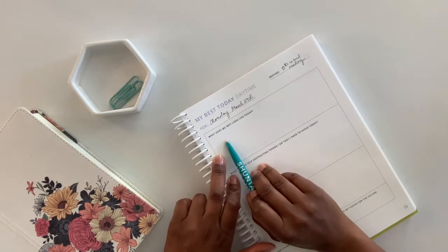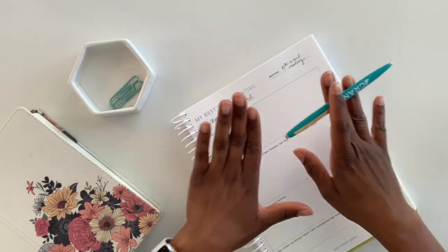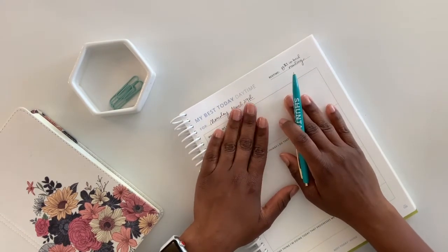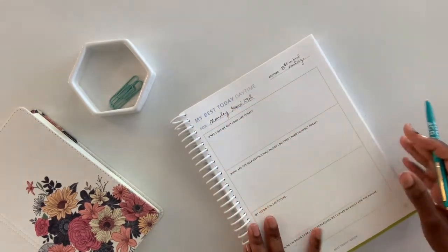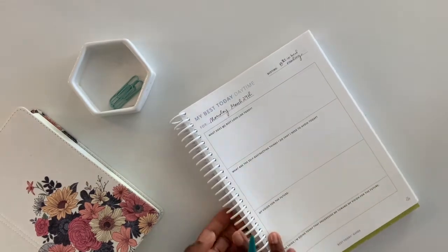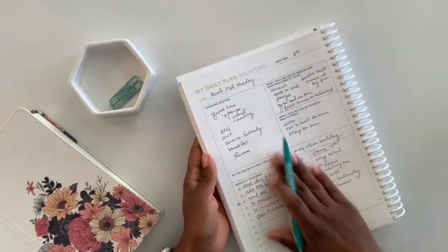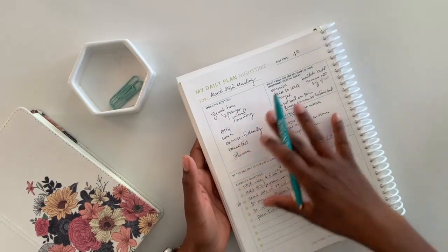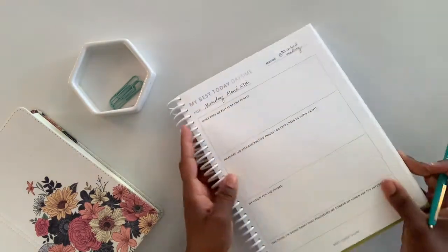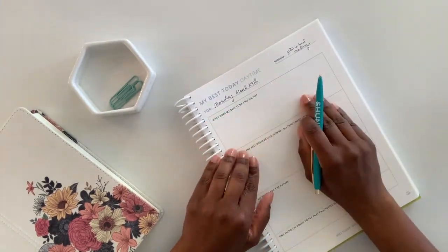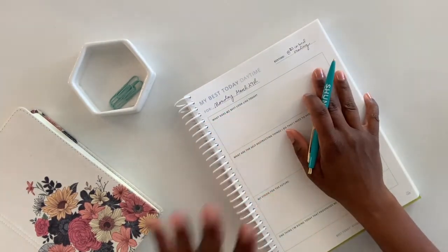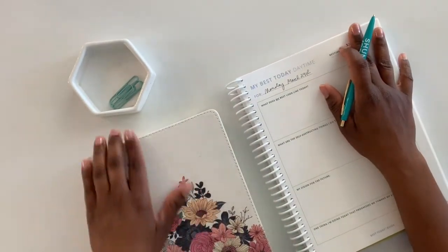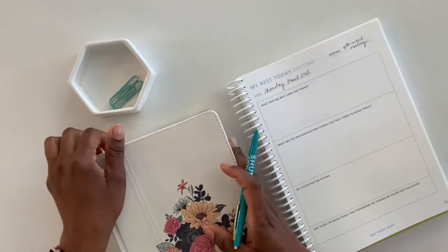And then what does my best today look like? Every day this changes or most days this changes a little bit. There are some things that are the same, but what I do is I look over and say, okay, well, what does my day call for? And so I'll go back and review what is coming up in the day. Okay. This is what I need to do. This is how I need to show up. This is what's being required of me for this day. And I'll use that to decide what my best today is going to incorporate.